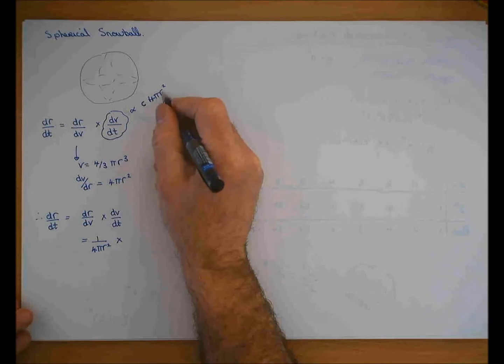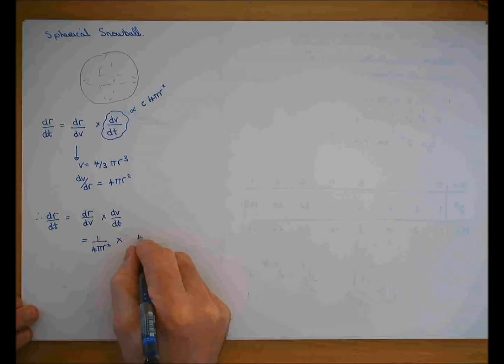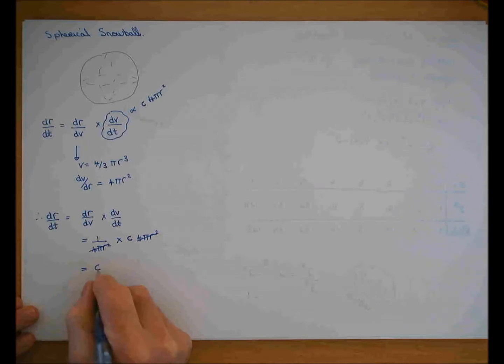dV/dt. They tell me it depends on the surface area, which is 4πr², so at some constant times 4πr², they cancel, which is some c, which is a constant.